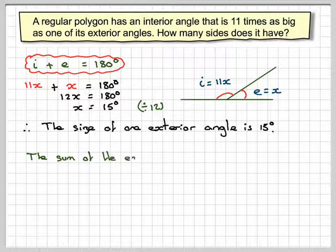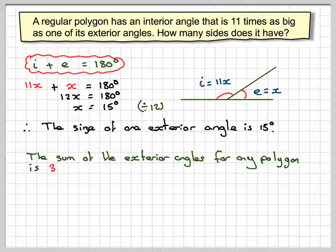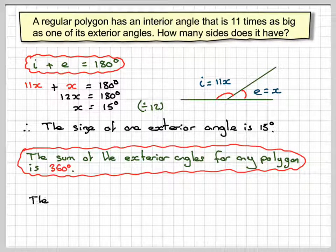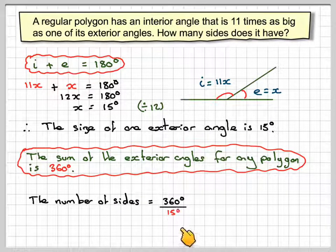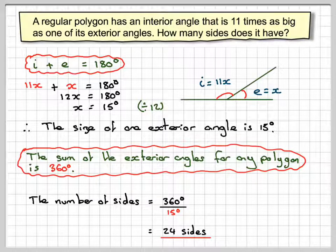And then we can use the idea that the sum of the exterior angles for any polygon is 360 degrees. Remember, we go right round in a circle. So the number of sides will be 360 degrees divided by 15 degrees, which gives me 24 sides.